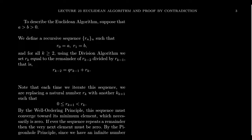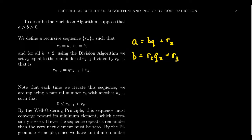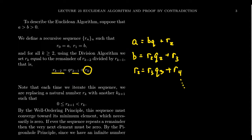Every other term in the sequence is defined recursively using the division algorithm. To get R_2, divide A by B and take the remainder. Then to get R_3, divide B by R_2 and take the remainder. Then R_4 is the remainder when R_2 is divided by R_3, and we continue this process. In general, to produce the K-th term of the sequence, we take the (K−2)-th remainder and divide it by the (K−1)-th remainder, producing the K-th remainder.